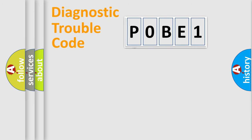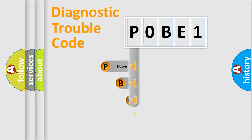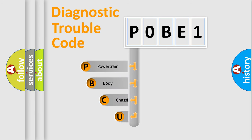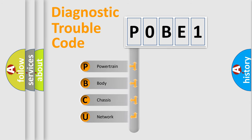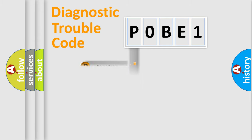First, let's look at the history of diagnostic fault code composition according to the OBD2 protocol, which is unified for all automakers since 2000. We divide the electric system of an automobile into four basic units: Powertrain, Body, Chassis, and Network. This distribution is defined in the first character of the code.